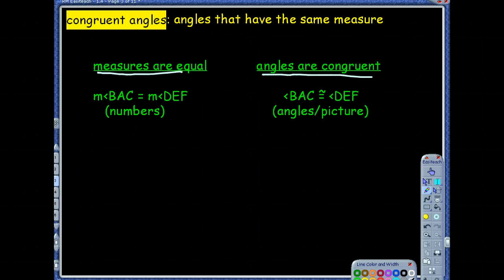Notice when we talk about the measure of an angle, you put a little M before the angle sign. So the measure of angle BAC, this would actually be a number, like 32 degrees. Now when you just see angle BAC, that's talking about the picture itself, the angle. So angles can be congruent, but their measures can be equal.